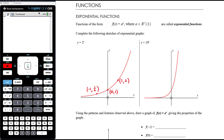Now consider y equals 10 to the power of x. When x equals 0, y is still 1 regardless of the base — whether it's 5, 10, or 173 to the power of x, they all have y-intercepts at 1. But when x equals 1, y is 10, and when x equals negative 1, y is one tenth. So we get a much more extreme exponential shape.